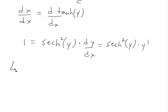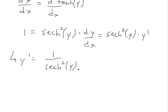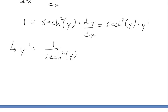Solving for y prime, we move the secant squared term to the left side, giving us y prime equals 1 divided by hyperbolic secant squared of y. Now we want to write this in terms of x.